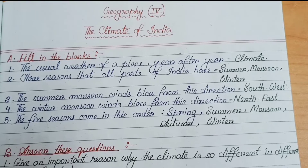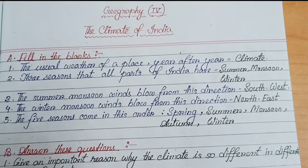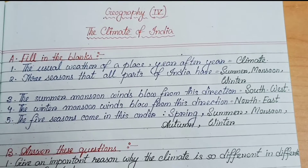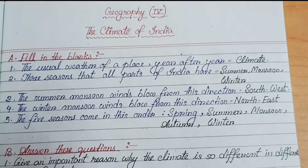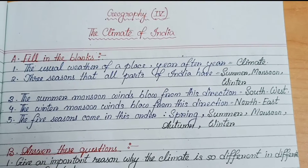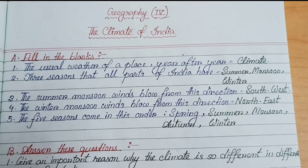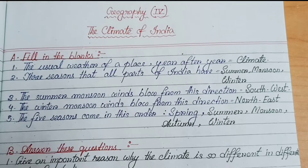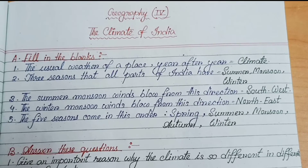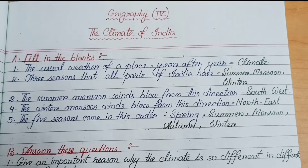Number 3: the summer monsoon winds blow from this direction — southwest. Number 4: the winter monsoon winds blow from this direction — northeast.